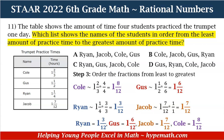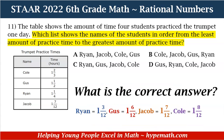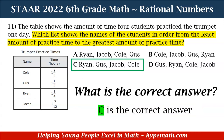So what is our correct answer? We need to look through our answer choices to discover which one has the same list as ours. Is it A: Ryan, Jacob, Cole, Gus; B: Cole, Jacob, Gus, Ryan; C: Ryan, Gus, Jacob, Cole; or D: Gus, Ryan, Cole, Jacob? The correct answer is C, ordering the students' names from least to greatest.